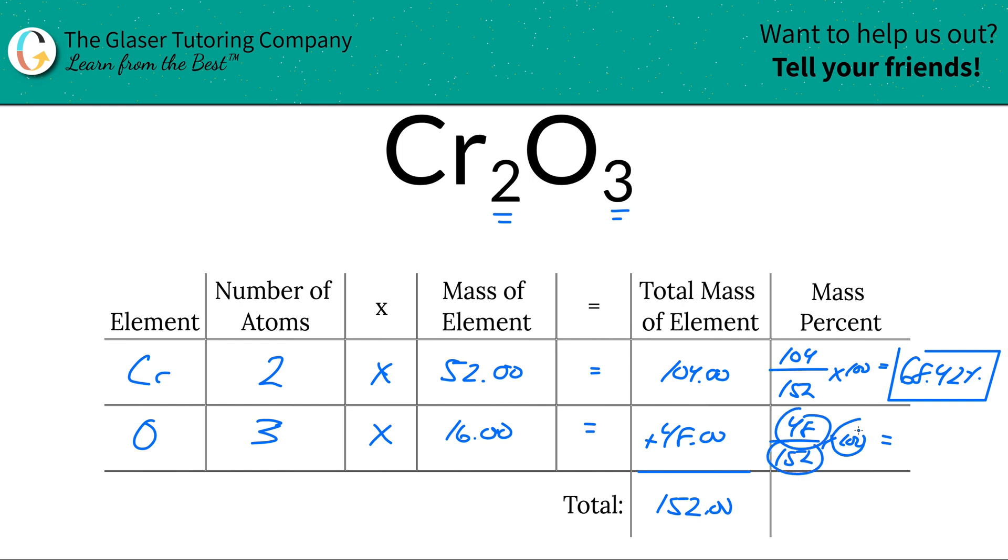Next one for oxygen - you're going to do 48 over 152 times it by 100. Simple. Part over whole, part over whole times 100. That's a percent.